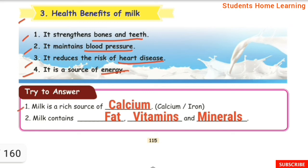Try to answer. First: Milk is a rich source of dash — calcium or iron? Answer: Calcium. Second: Milk contains dash, dash and dash. Answer: Fat, vitamins and minerals.